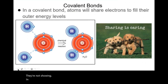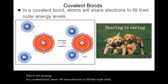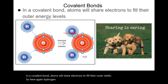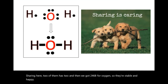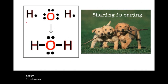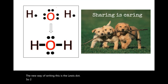In the covalent bond, atoms will share electrons to fill their outer shells. Hydrogen now has two electrons. For water: two, four, six, eight for oxygen — so they're stable and happy. The new way of writing this is the Lewis dot diagram. Oxygen has six valence electrons; hydrogen wants two.